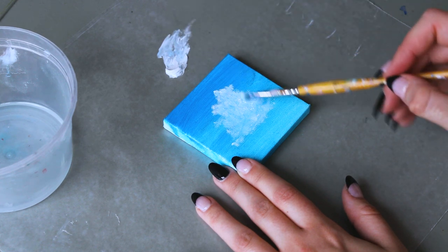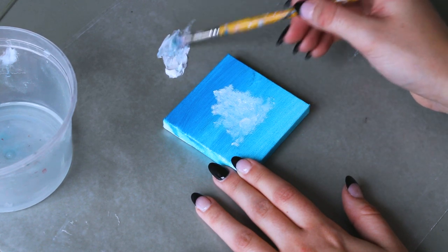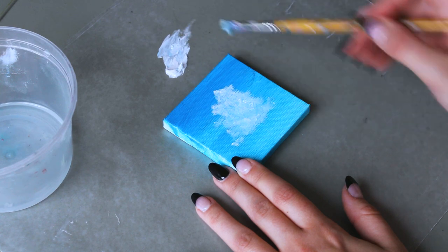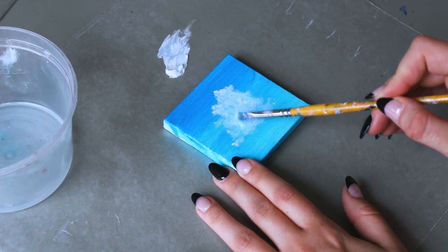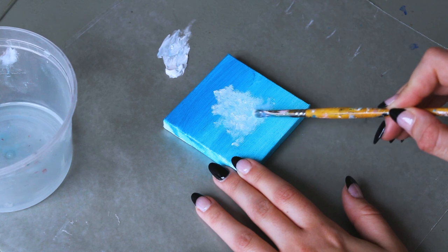I have decided that my light source is coming from the top right of my canvas. Continuing with this stippling technique, I highlight areas of the cloud that sunlight would naturally fall upon.